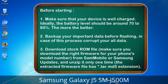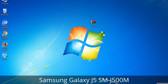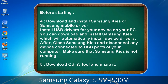3. Download the stock ROM file. Make sure you download the right firmware for your phone's model number from Sammobile or Samsung Updates, and unzip it only one time. The extracted firmware file has a *.tar.md5 extension.